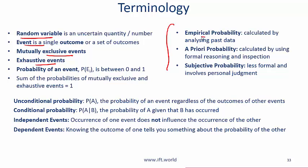Remember these terms: empirical probability is a probability that is arrived at based on analyzing data. A priori probability is calculated by using formal reasoning and inspection and subjective probability is less formal, it involves judgment. Remember that.